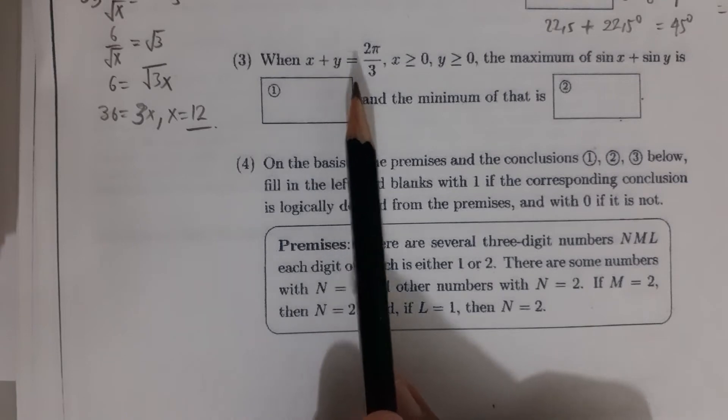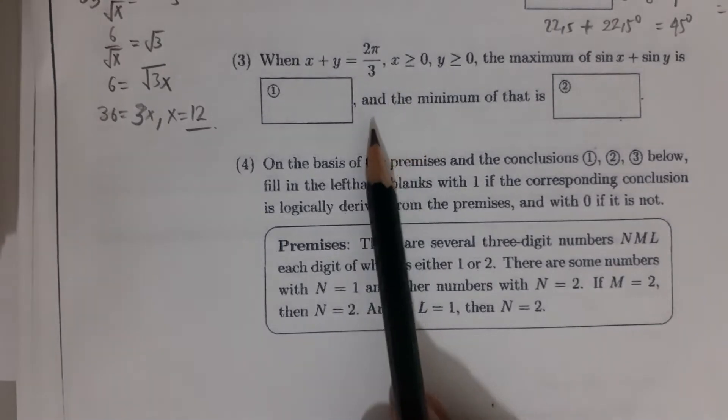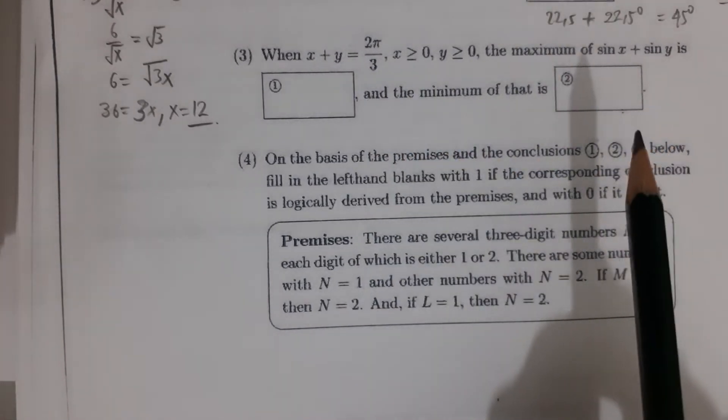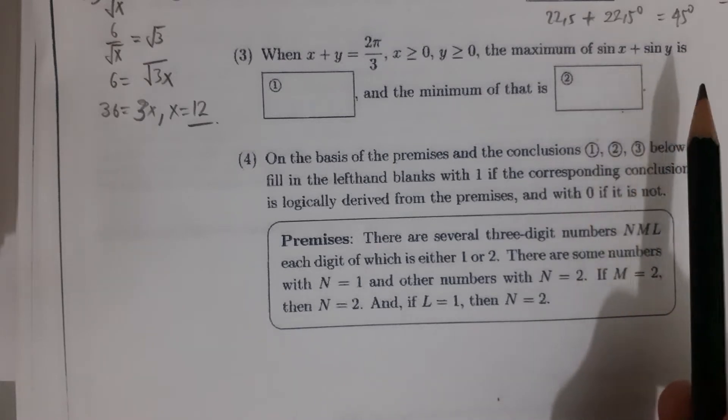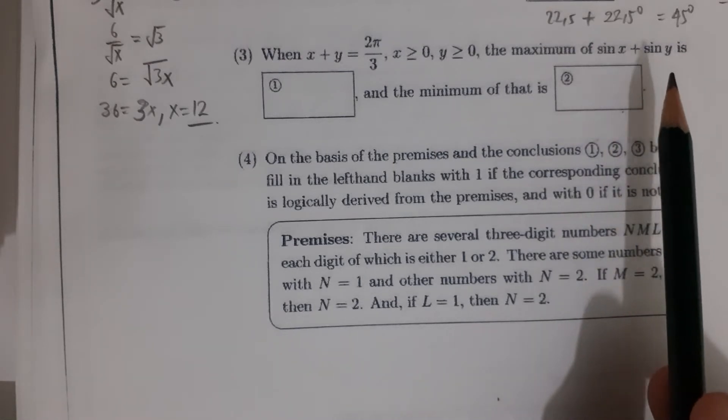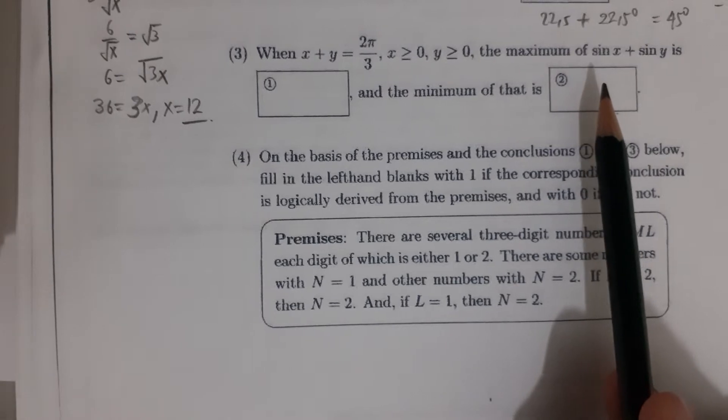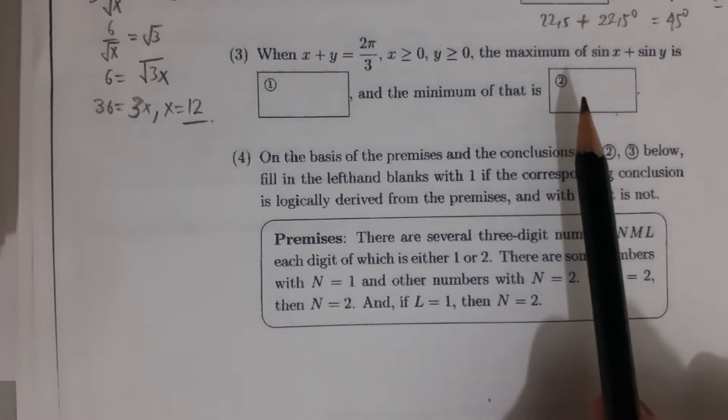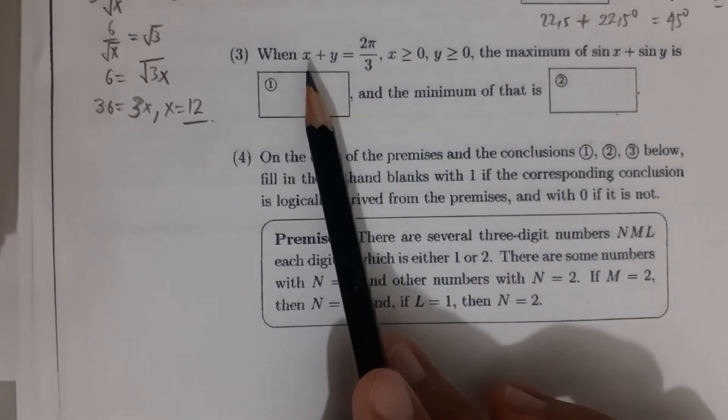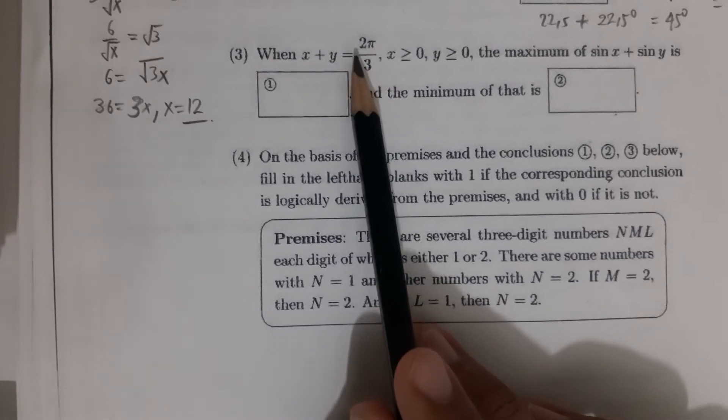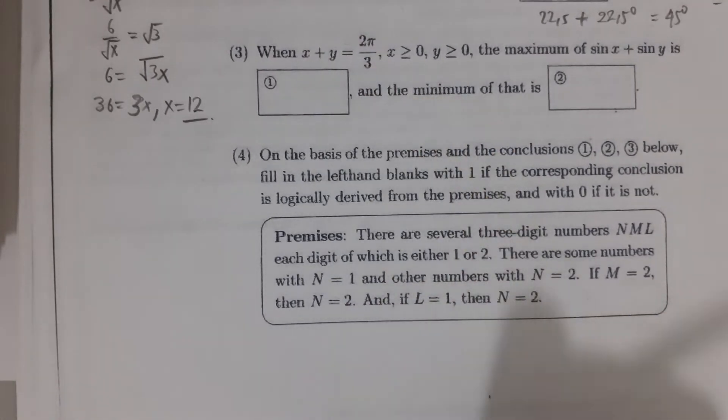x + y = 2π/3, you cannot put x = 0 and y = 0. If you think sin 0 + sin 0 = 0 is the minimum, that is incorrect, because x + y should be 2π/3, and 0 + 0 ≠ 2π/3.